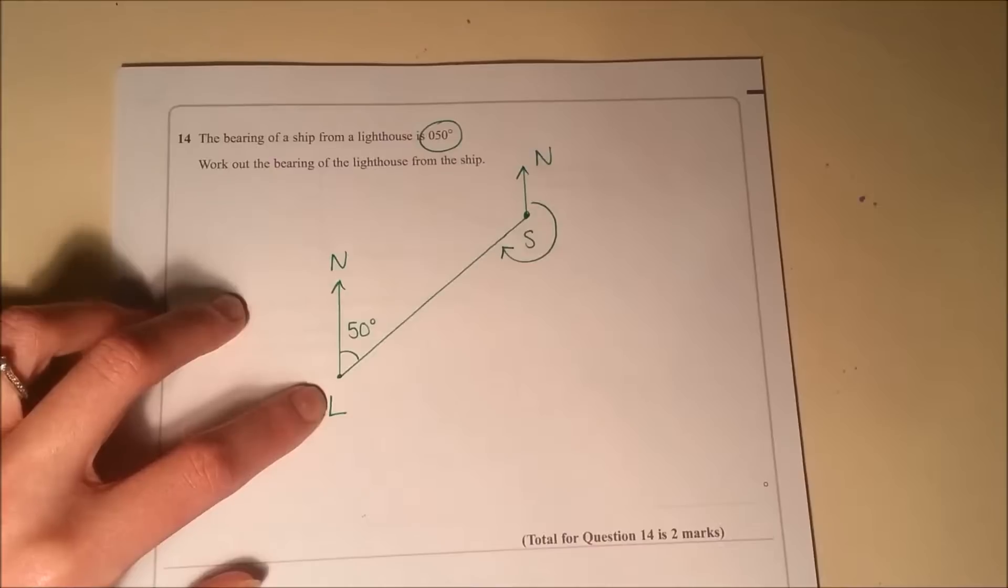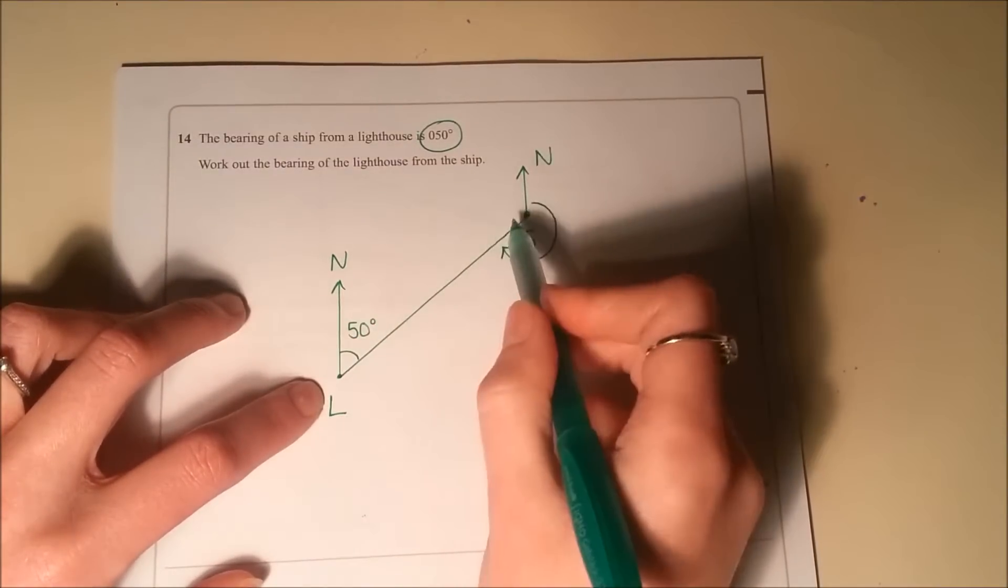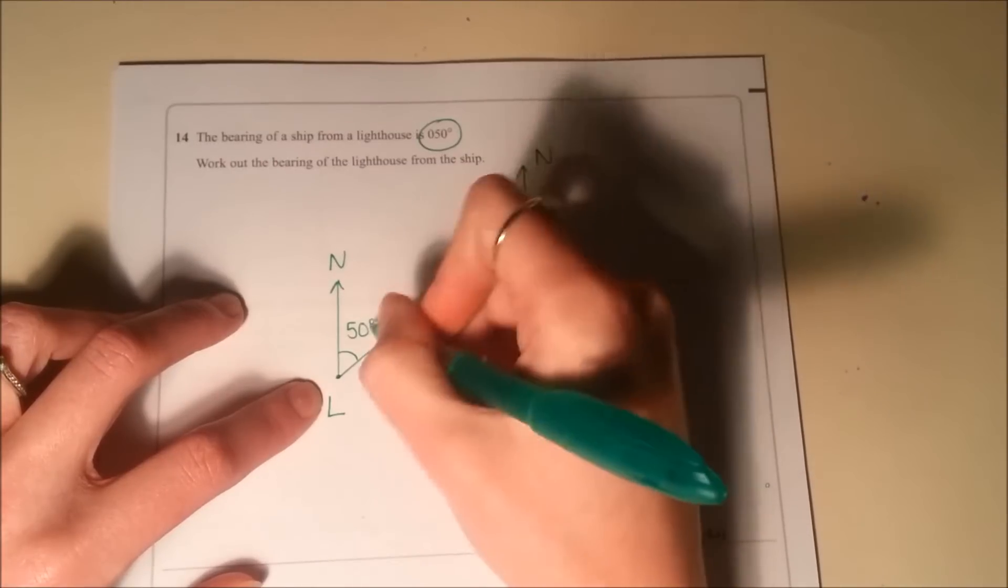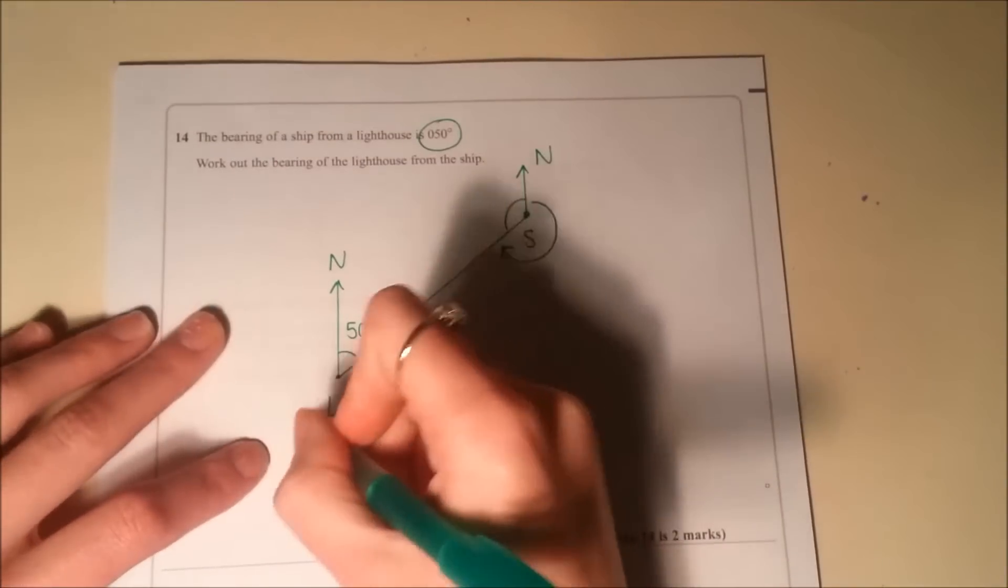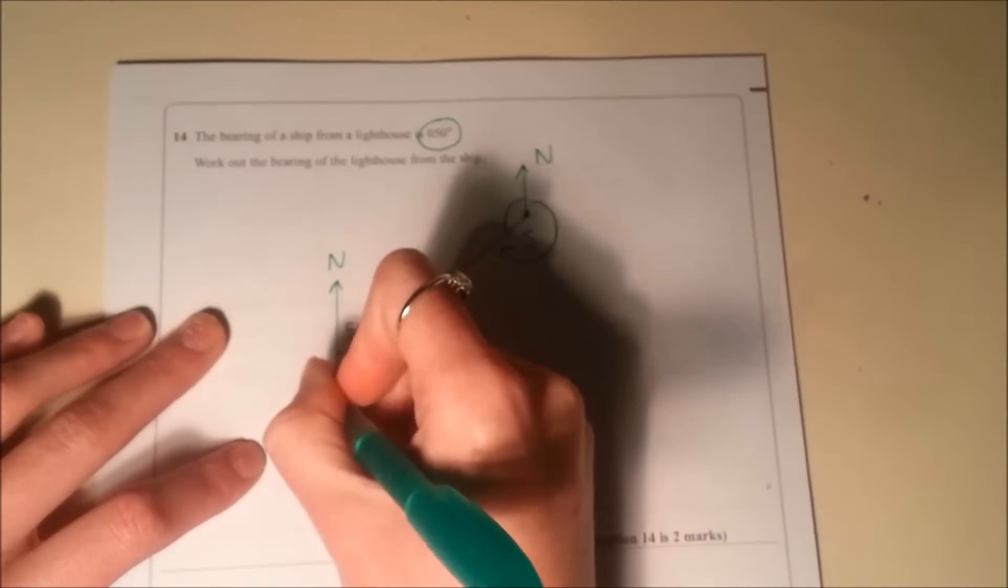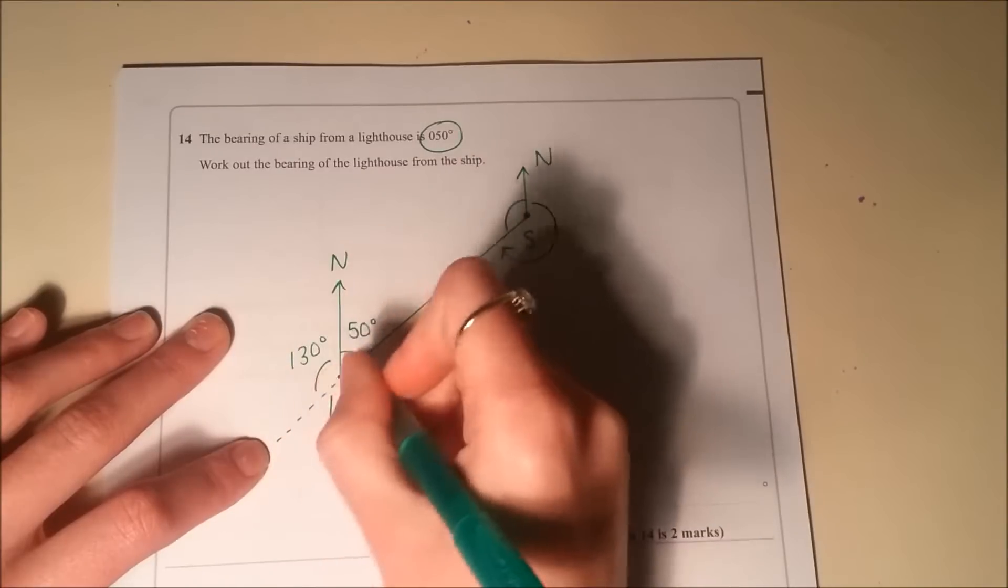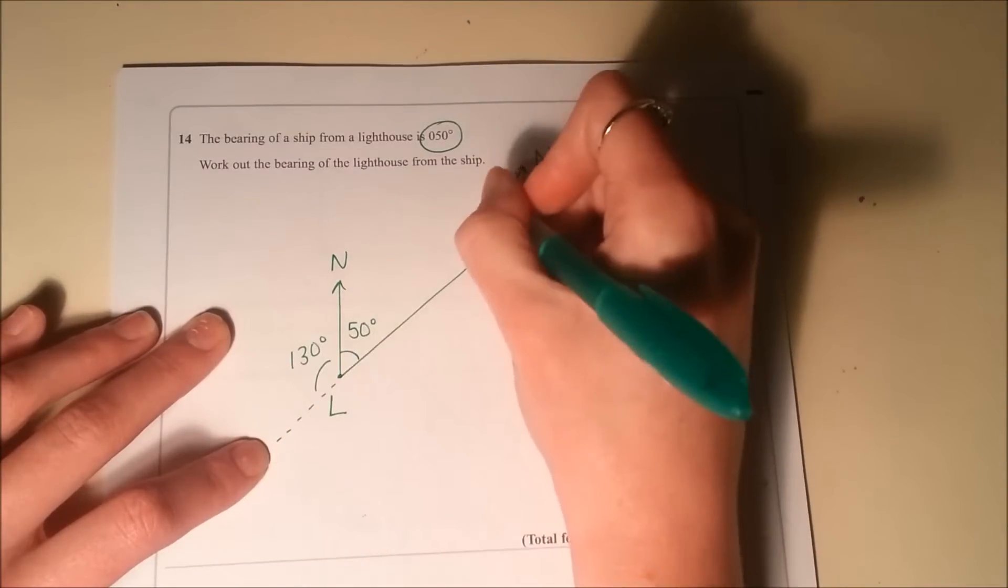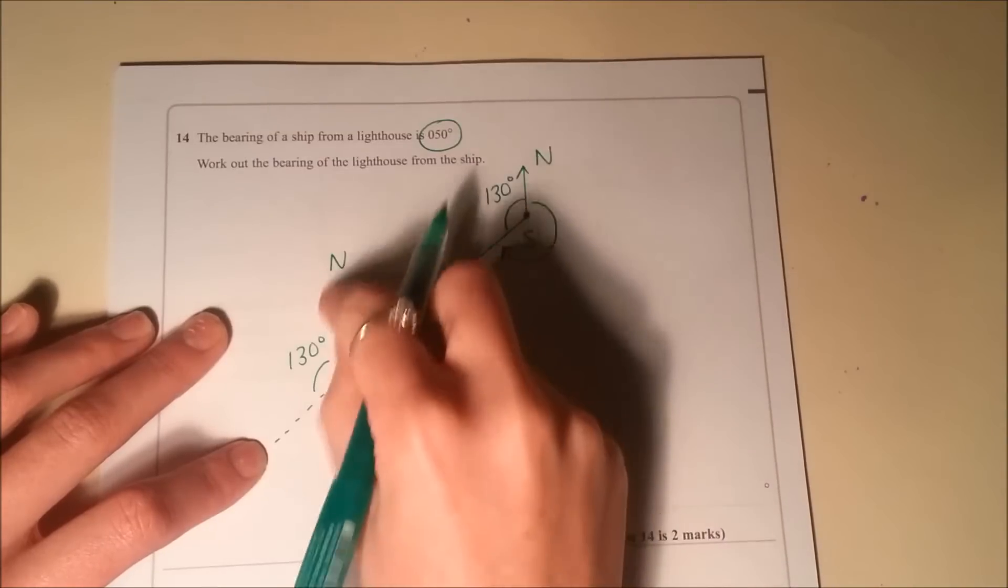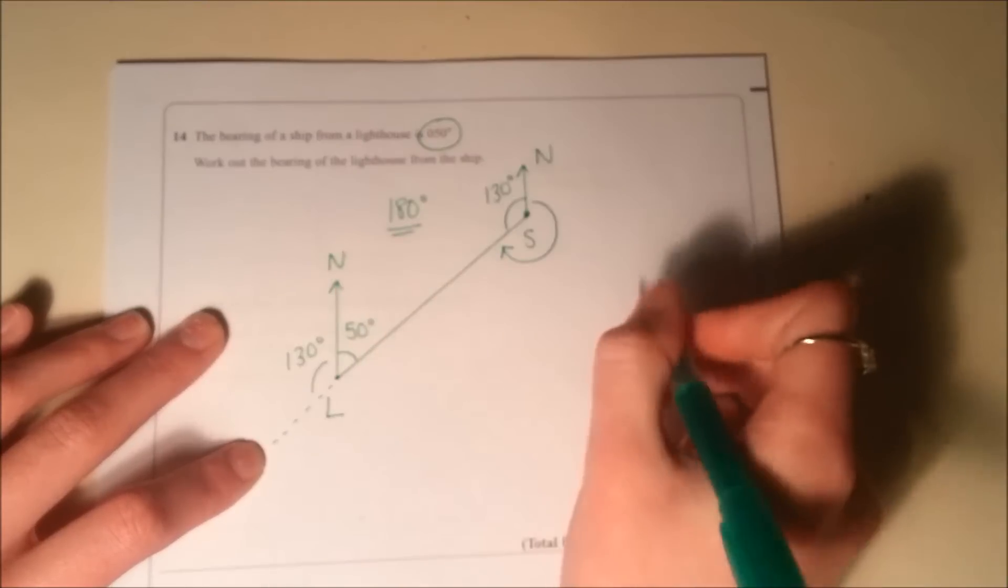Now there's a couple of different ways I can do this. There's quite a nice little trick with bearings, which is that these two angles inside here, because actually to do with the properties of parallel lines, this one is the same as this one. This one will have to be 130 degrees because angles on a straight line are 180. That one will also be 130 degrees. Inside these two bearing lines, your angles are always going to add up to 180.